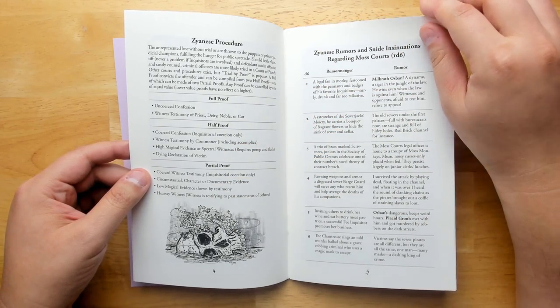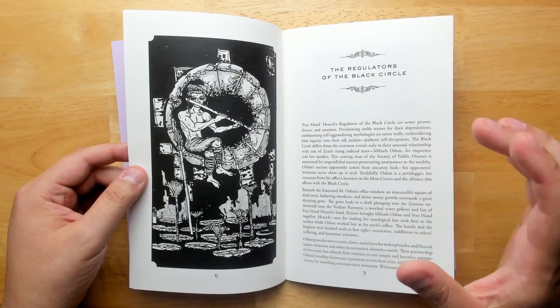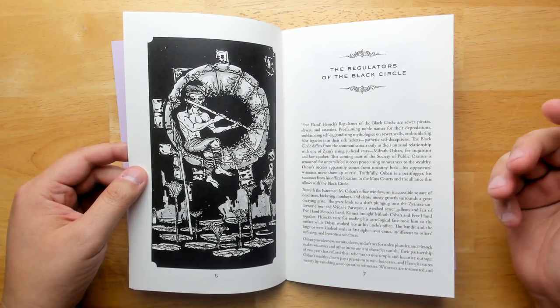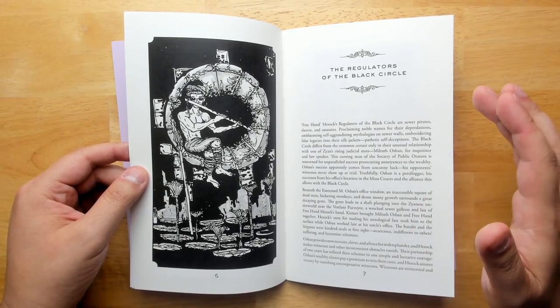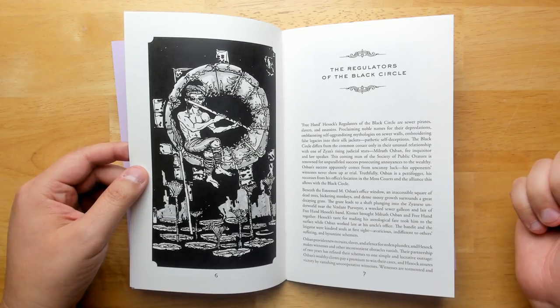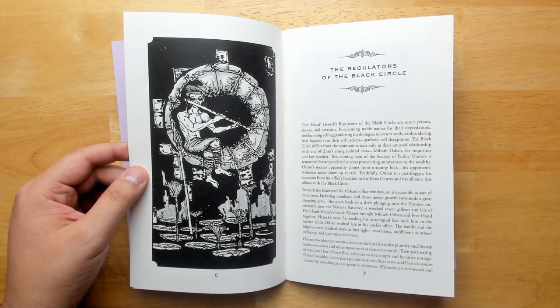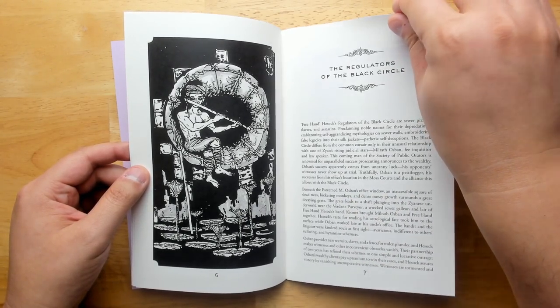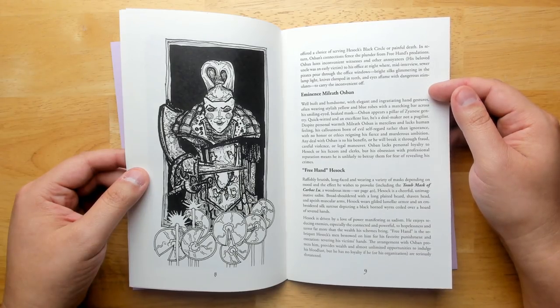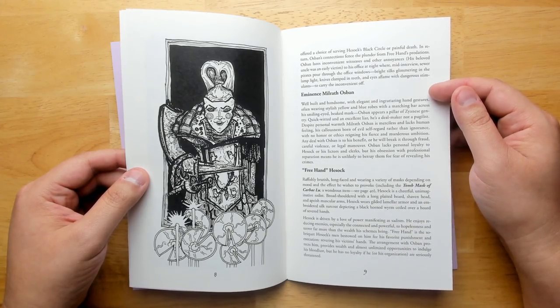We have some rumors regarding the Moss courts and some rumor mongers and regulators of the black circle. So this revolves around a particular lawyer who has become famous in these courts because his opponents never show up. There's never any opposing witnesses. And that's because he is in alliance with the black circle, which is basically a gang, a gang of cutthroats of pirates who are absolutely bloodthirsty and are able to take out his witnesses. They never show up in court. In return, he's able to help fence their goods. So they're in this deal together.